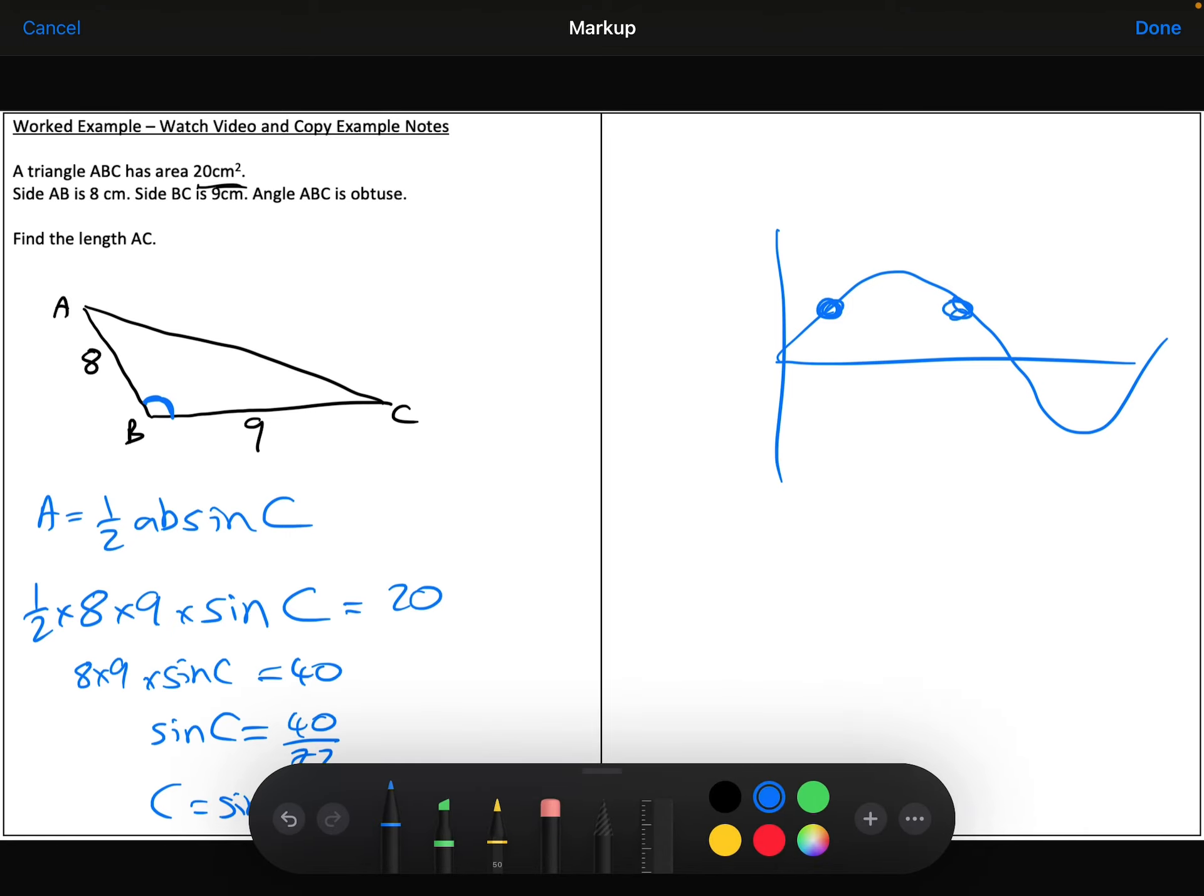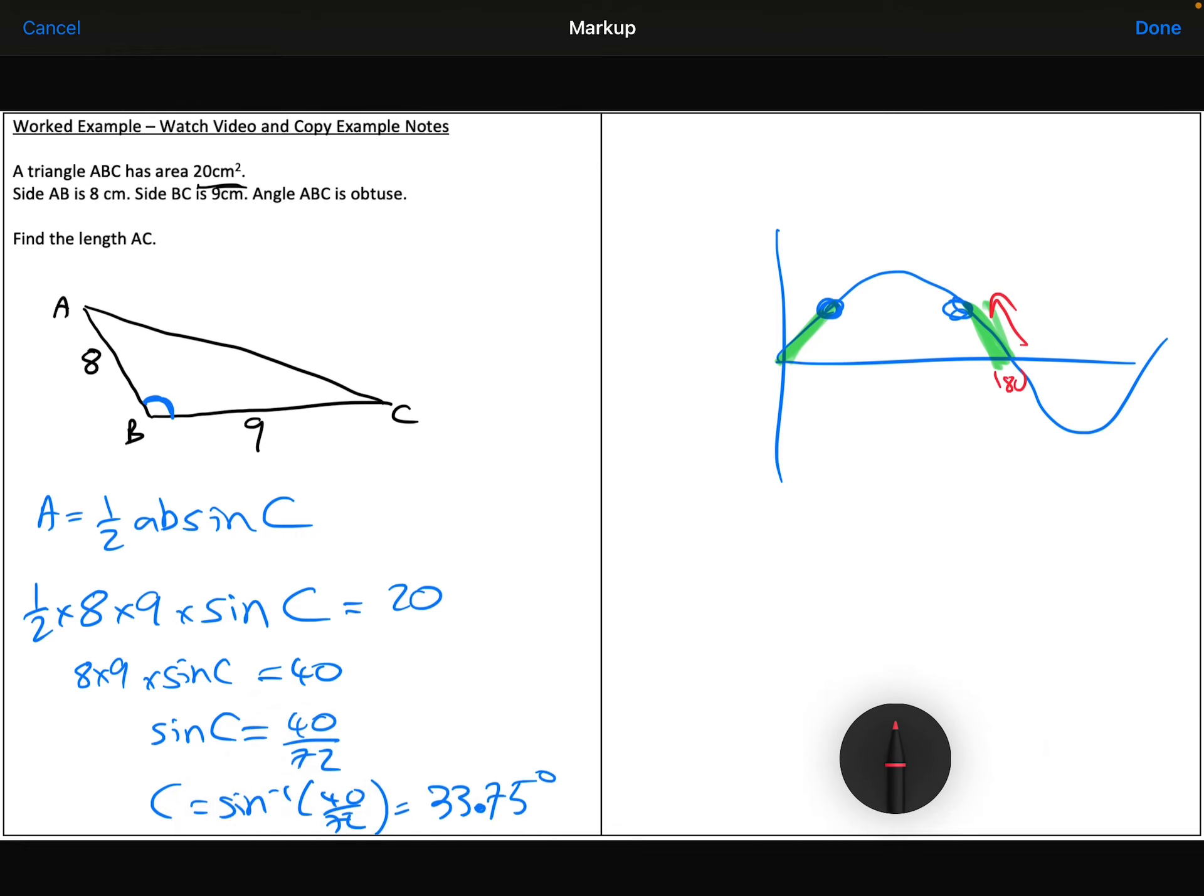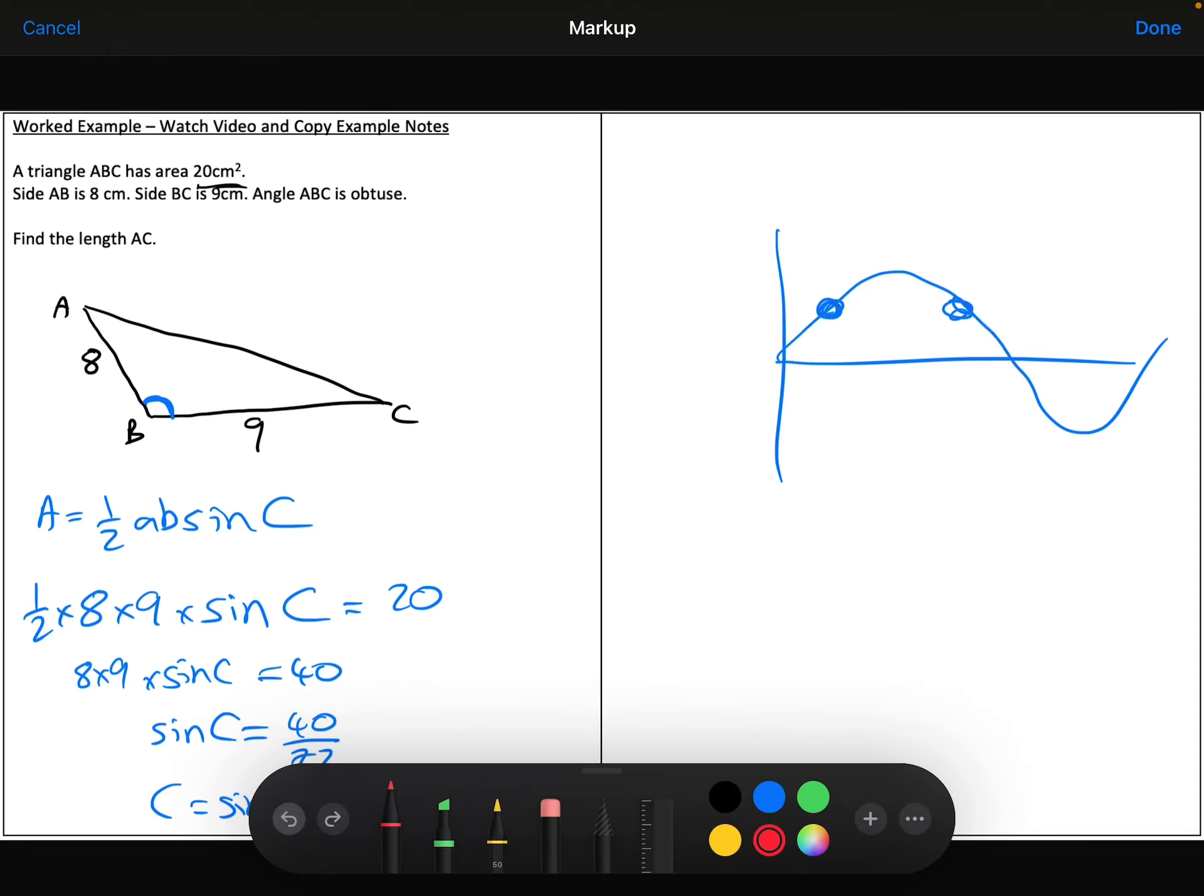So the calculator is giving you this angle here. I want this angle, so I need to do 180 minus the 33.75 to get my angle that I actually want.